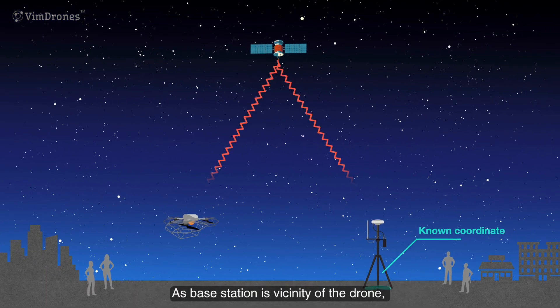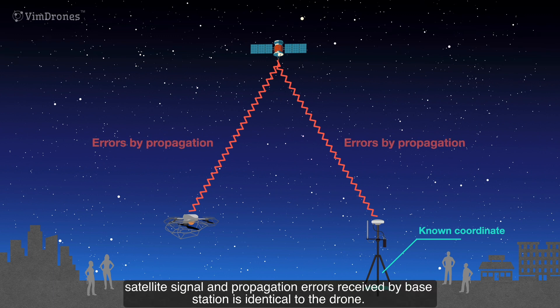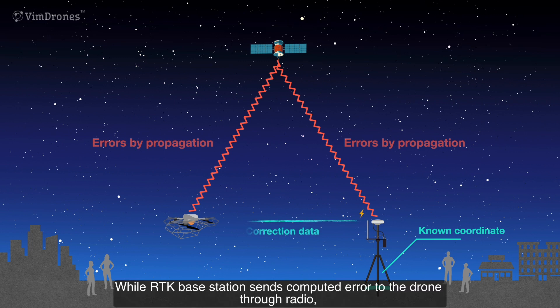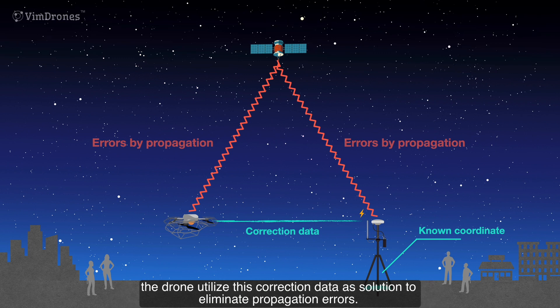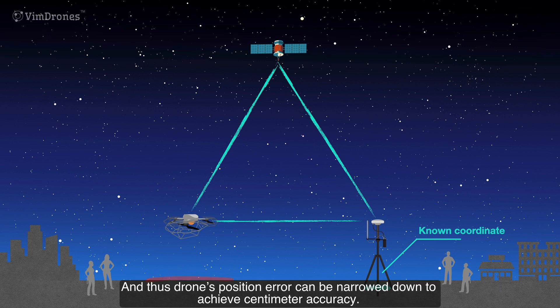As the base station is in the vicinity of the drone, the satellite signal and propagation errors received by the base station are identical to those of the drone. While the RTK base station sends the computed error to the drone through radio, the drone utilizes this correction data as a solution to eliminate propagation errors. And thus the drone's position error can be narrowed down to achieve centimeter accuracy.